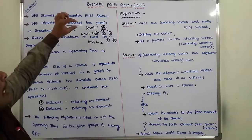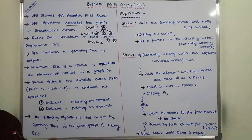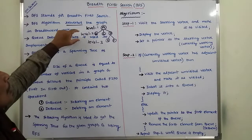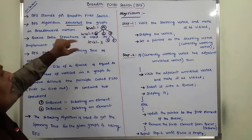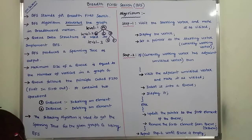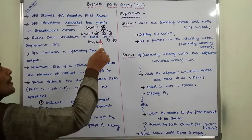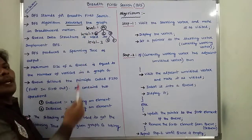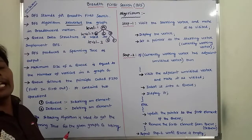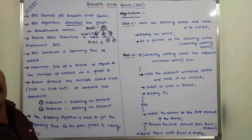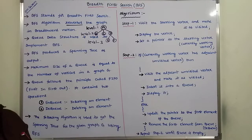First, level 1 vertices are visited. After that, it goes to level 2 vertices. After that, it goes to level 3 vertices. Because of that reason, we can say that BFS visits the vertices in a given graph in a level-by-level order.